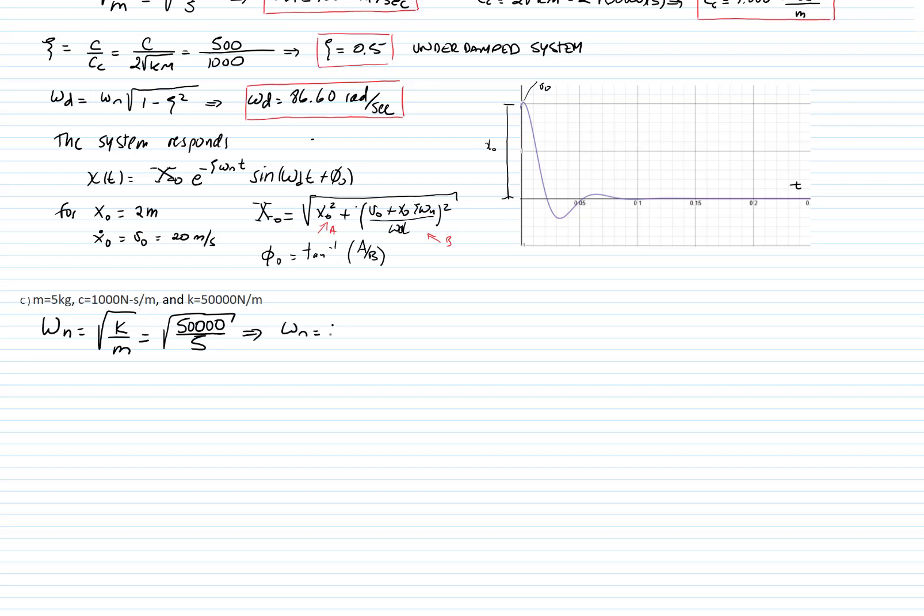The critical damping equals 100 Ns per meter, and the critical damping equals 2 square root of km. We have our damping ratio over critical damping, that's 1000 over 1000, and we get zeta equals 1. This is what is called a critically damped system.